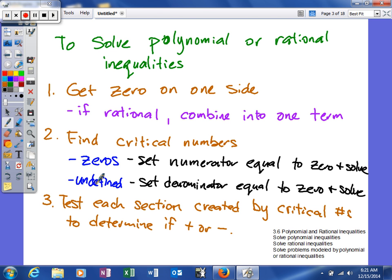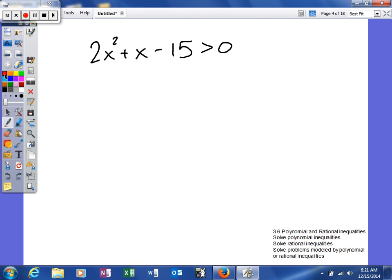And then once we do that, each critical number is going to divide our graph into different sections. We need to basically test each section to determine whether that section is going to be positive or negative. And sometimes we can use graphs to help us out with stuff like that. So let's look at example number one here.